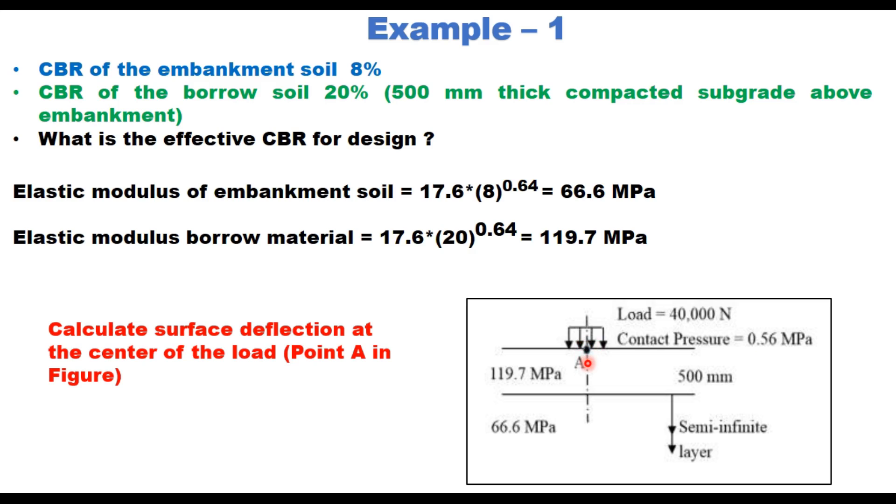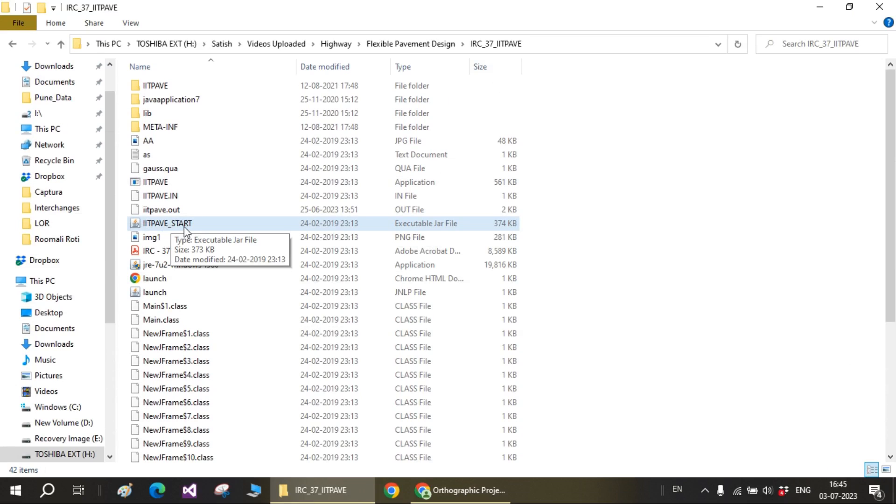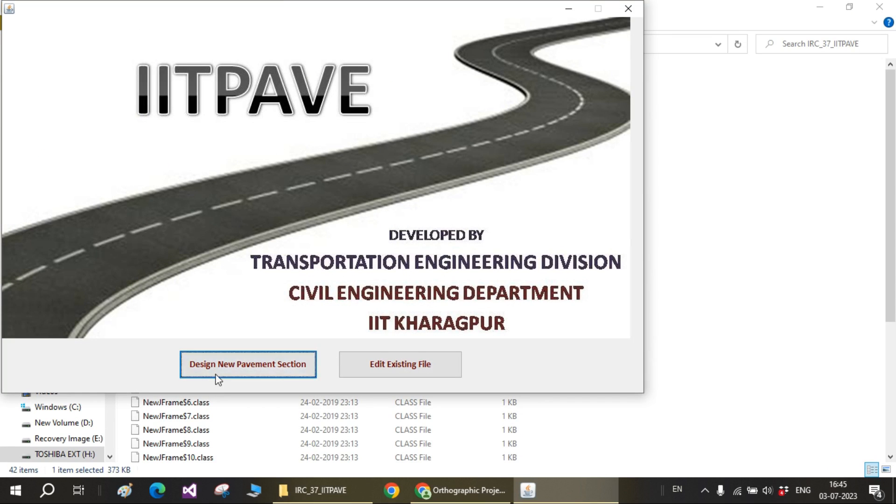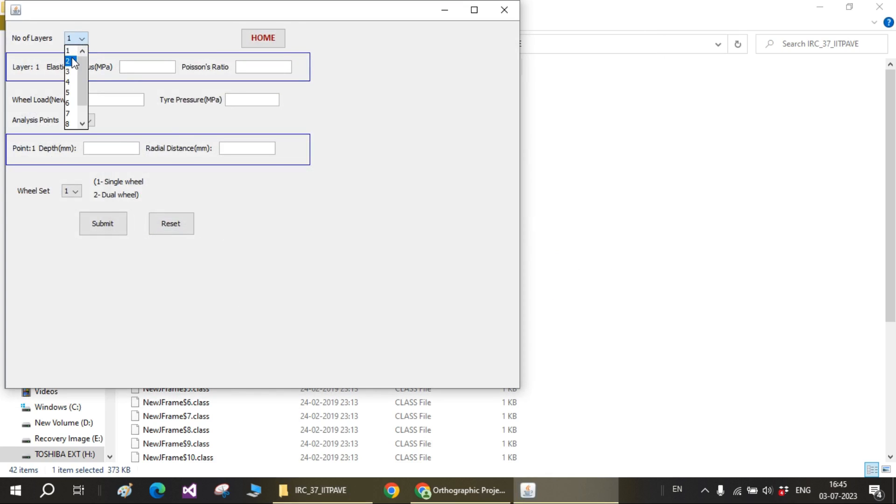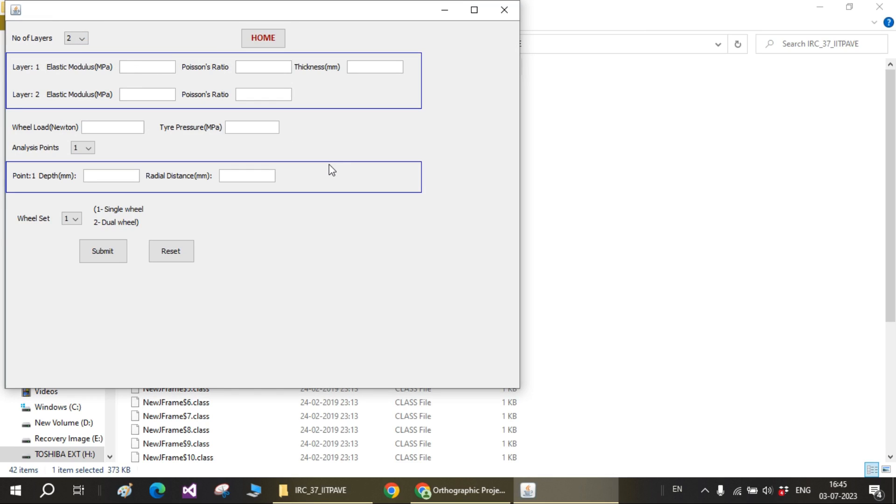So let us now go to IIT PAVE software and see how this surface deflection is calculated. This is IIT PAVE start file on my computer. We start this and you get this kind of screen: design new pavement section. Here you put number of layers 2 and then feed the values of elastic modulus. Layer 1 is your the top layer, that is 500 millimeter with a MR value of 119.7. Poisson ratio is 0.35 and thickness is 500 millimeter, that is subgrade. And the lower layer has a MR value of 66.6 and same Poisson ratio 0.35. It is infinite thickness and therefore it does not ask you for the thickness of this layer.